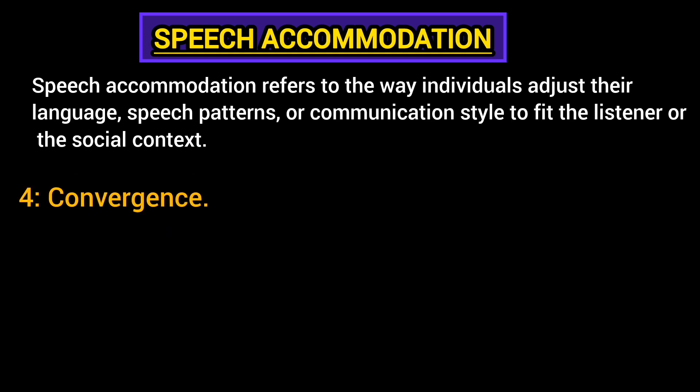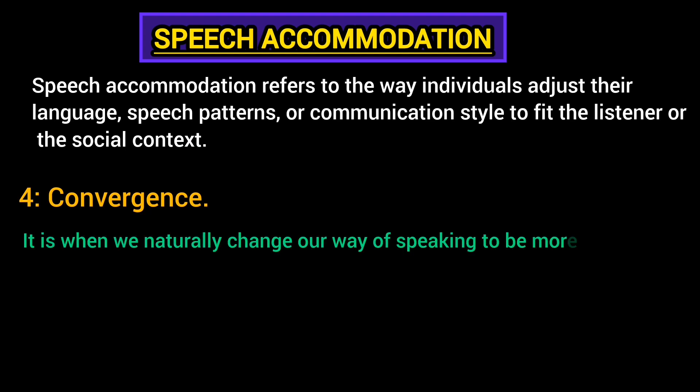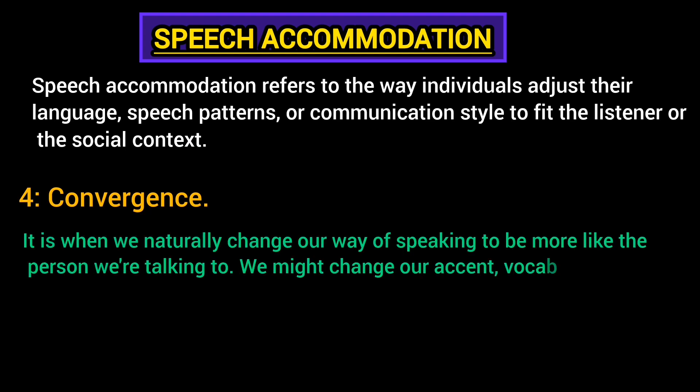Convergence is another main point of speech accommodation. It is when we naturally change our way of speaking to be more like the person we're talking to — we might change our accent, vocabulary, tone, or speed to match theirs. This is done for several reasons; the first is that it helps us feel closer to others and shows we're on the same page.